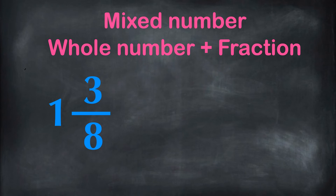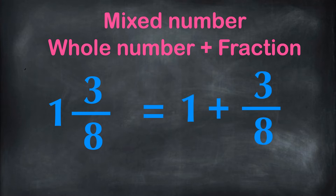A mixed number is a fraction with a whole number and a fraction. Here we have a mixed number 1 and 3 eighths. This mixed number has a whole number 1 and a fraction 3 eighths. Even though you do not see the plus sign here, these two numbers are actually added. So you can write 1 and 3 eighths as 1 plus 3 eighths.